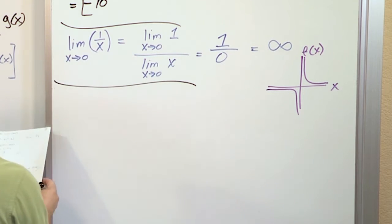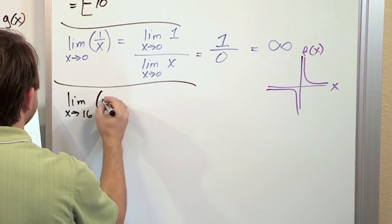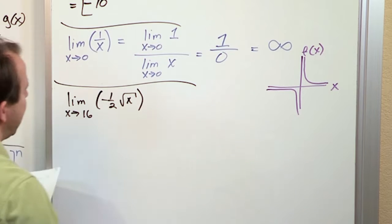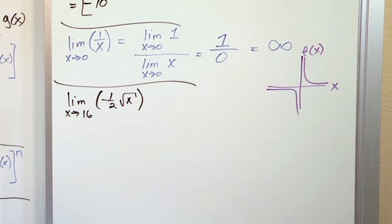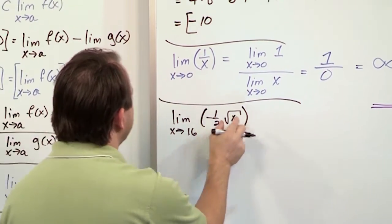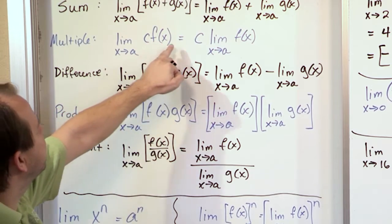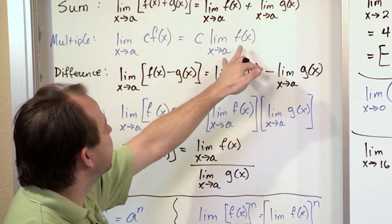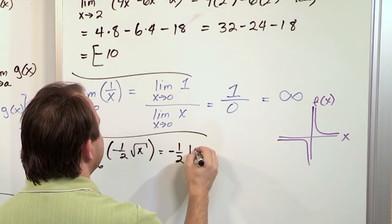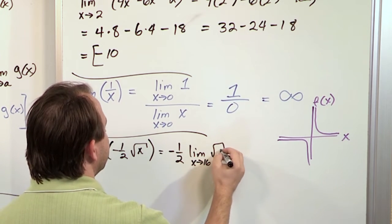The next one: what if I have the limit as x approaches 16 of the function negative 1 half times the square root of x? How would I approach that? You already know — try to plug it in, see if you get a weird answer. But really what's happening is this is a constant times a function, and if I have the limit of a constant times a function, I just take the constant out and then take the limit of the function.